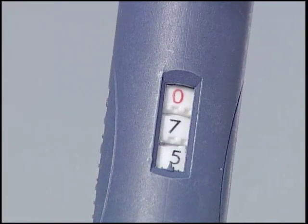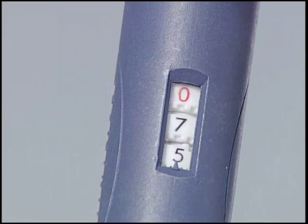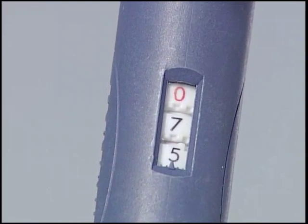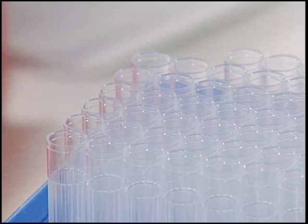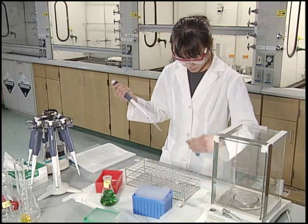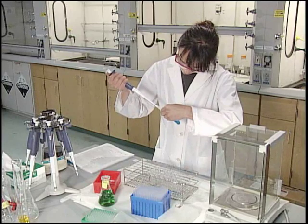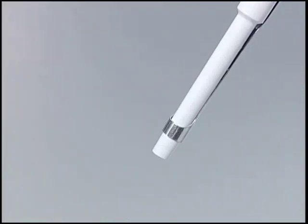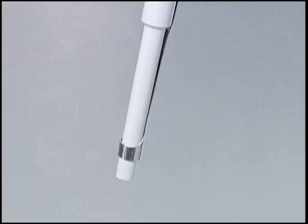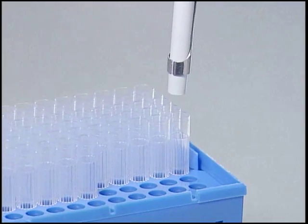After the desired volume is set, then place a disposable tip to the end of the pipette shaft. To ensure a tight fit, first align the pipettor over the tip. Once aligned, gently tap the pipettor into the tip. The tip will butt up against the tip holder and this will create a tight seal around the pipettor shaft.